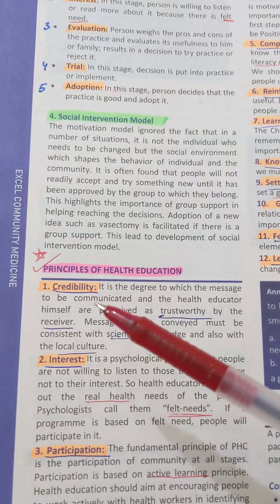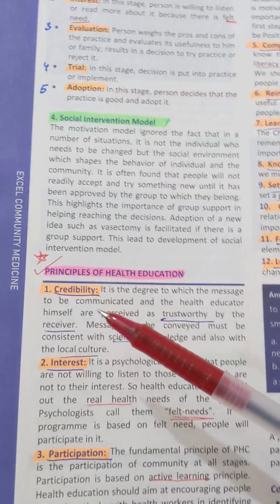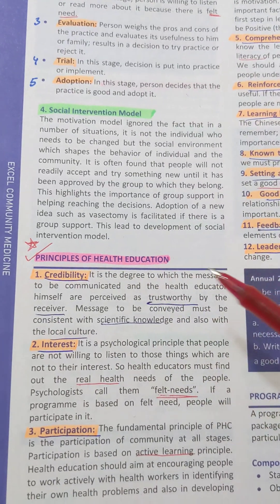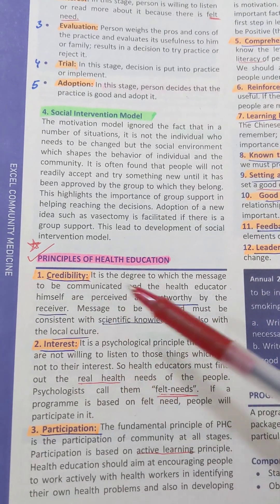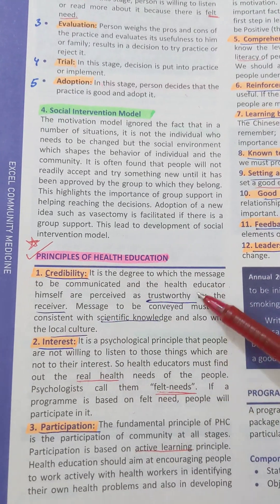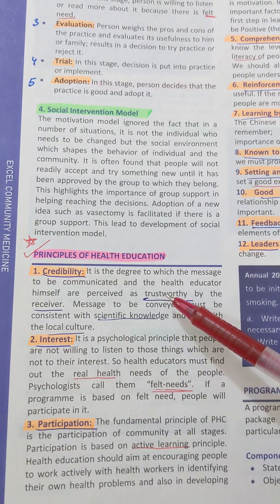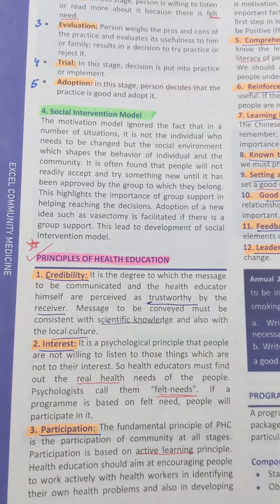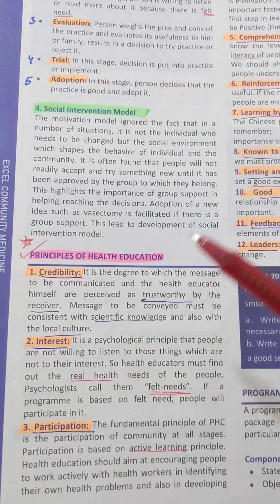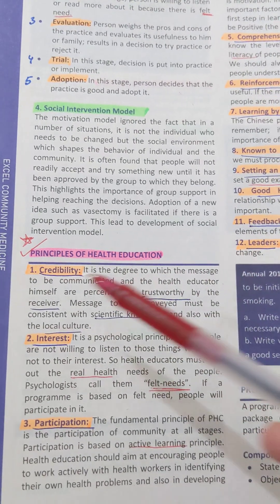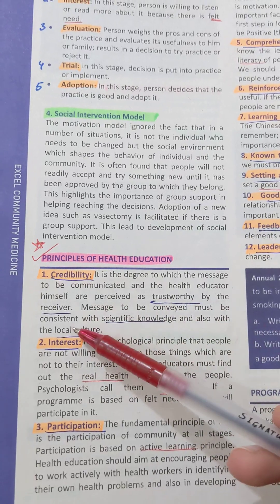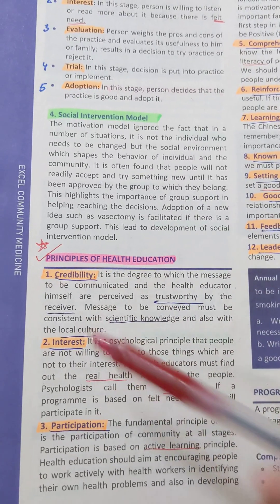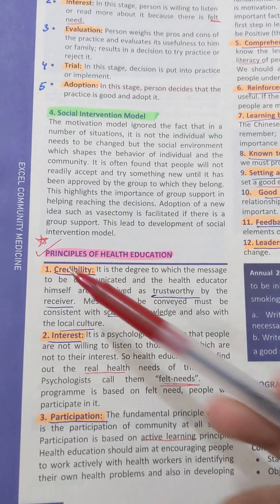Number 1 is credibility. Credibility is the degree to which the message to be communicated and the health educator himself are perceived as trustworthy by the receiver. The message to be conveyed must be consistent with scientific knowledge and also with the local culture.